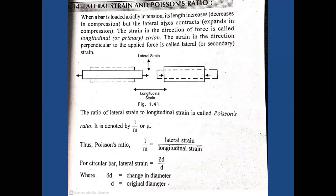The next concept is lateral strain. When a bar is loaded axially in tension, its length increases — as we know, whenever the body is loaded axially its length increases and decreases in compression. In compression, the lateral size expands. In tension, the diameter contracts. The strain in the direction of force is called longitudinal strain.